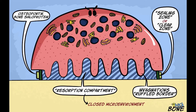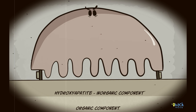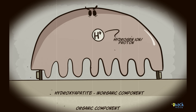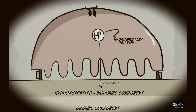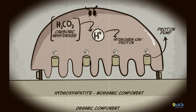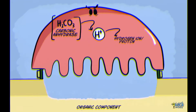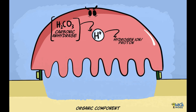The cytoplasm of the osteoclast consists of several nuclei surrounded by Golgi complexes, rough endoplasmic reticulum, and mitochondria. The hydroxyapatite forming the inorganic material is removed first by the action of hydrogen ions or protons. The hydrogen ions are derived from carbonic anhydrase in the cytoplasm of the cell and are pumped into the resorption compartment via proton pumps. This demineralizes the bone and exposes the organic matrix.